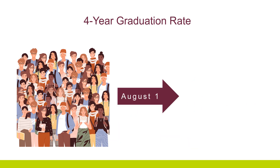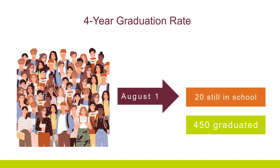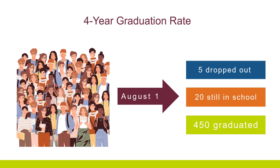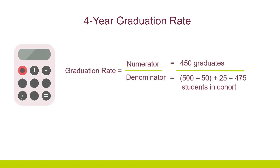By August 1, 450 students have graduated, 20 are still in school, and five have dropped out. The four-year cohort graduation rate is calculated as follows.